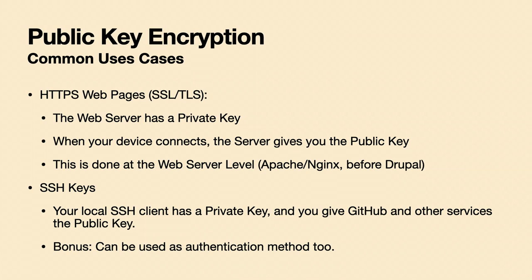Another place public-private key encryption is used is with SSH keys. If you use SSH as a web developer, on your local machine you've created a private key that will never leave your machine — in some cases it's stored on a USB device for extra security. You give GitHub and other places the public key, and that's used to encrypt data back and forth. Having the private key also proves your identity — assuming you're not sharing it, which you should not do.